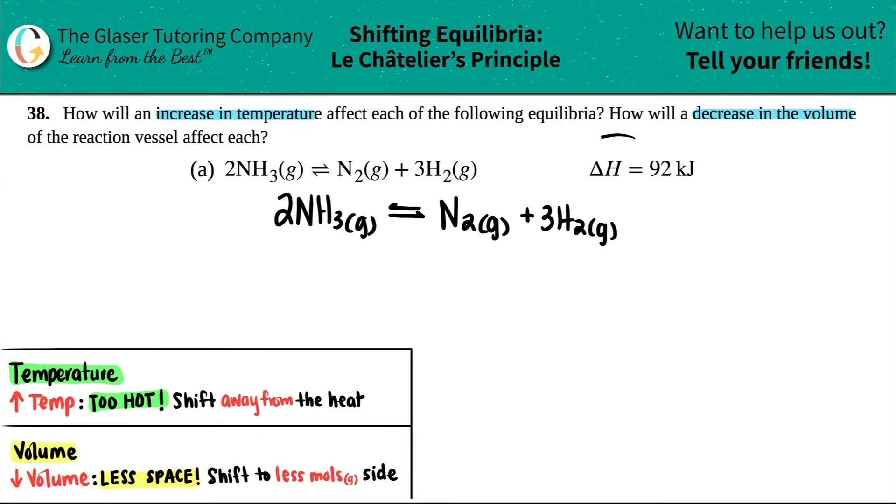worry about the number. I just like to talk about this in terms of heat. Remember back in a previous chapter, if the delta H is positive, which it is here, that means this is endothermic.